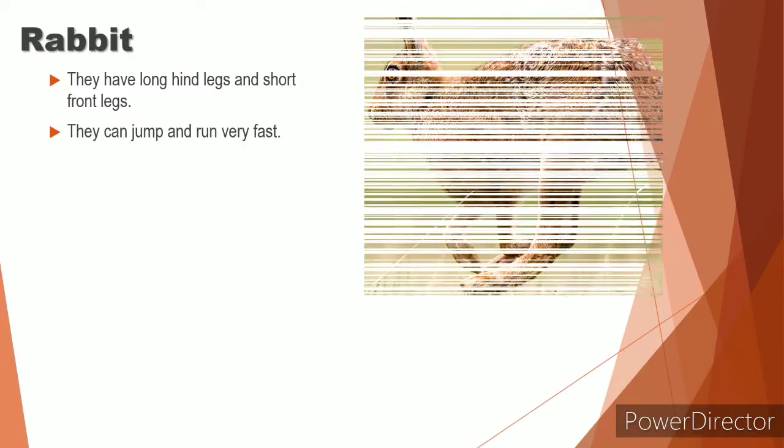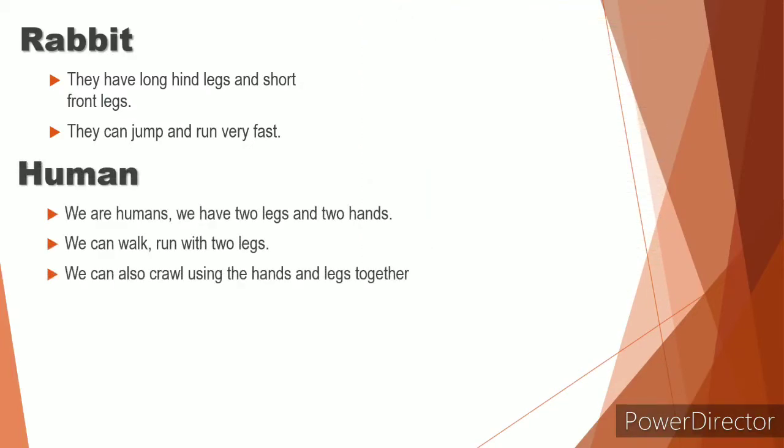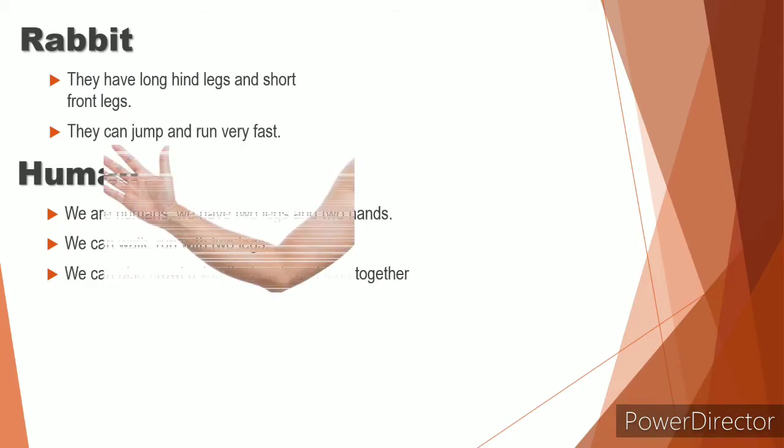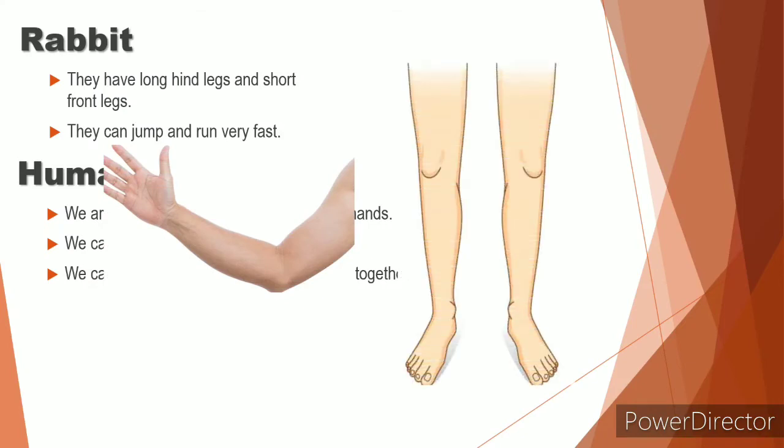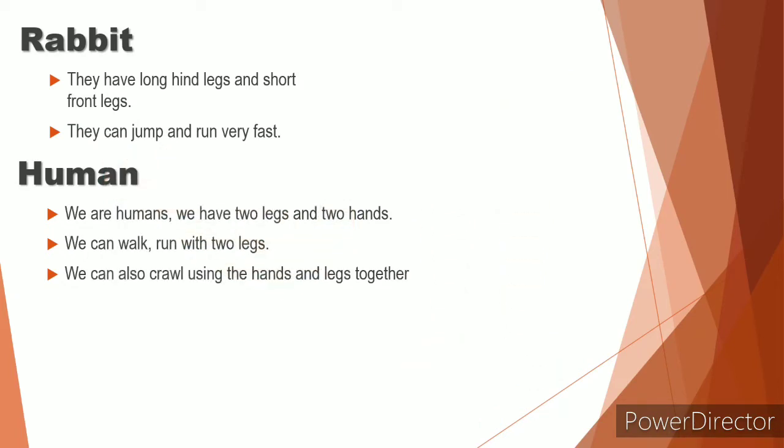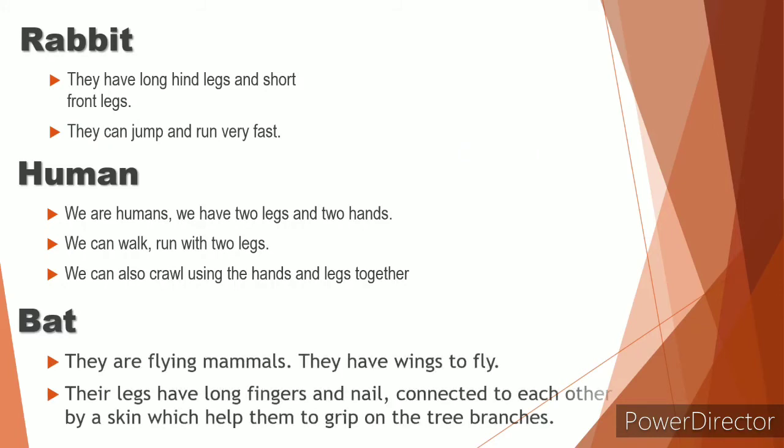Now let's talk about us. What do you have? Look at yourself. You have hands and legs and we can run in an upright position using our legs. We can also crawl using our hands and legs. Have you seen any human baby crawling?